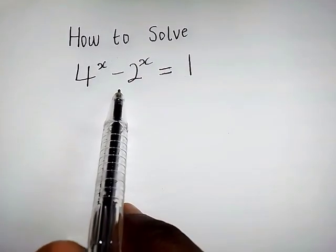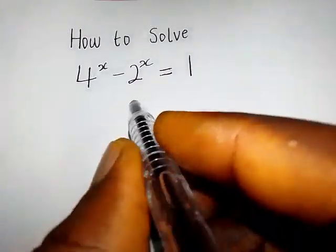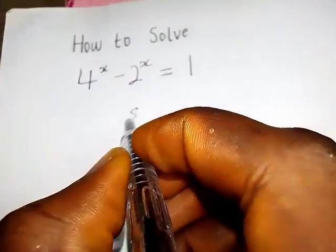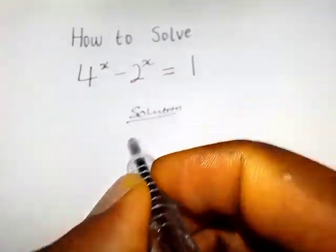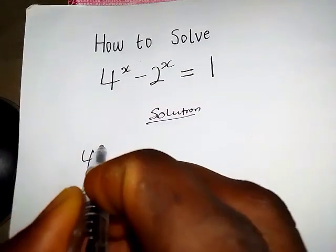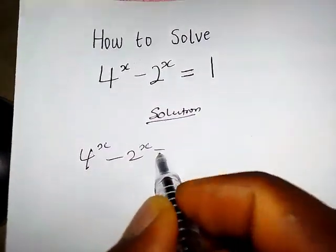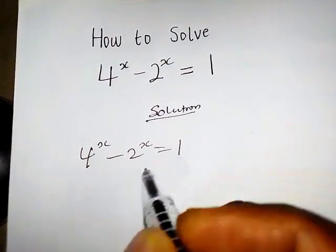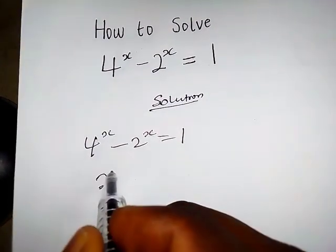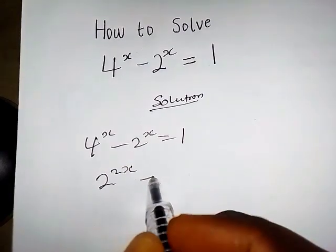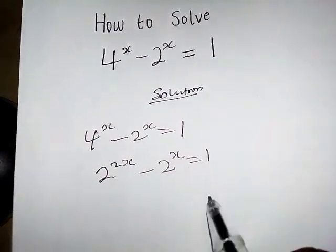How to solve 4 raised to the power of x minus 2 raised to the power of x equals 1. We have 4^x minus 2^x equals 1, which can be written as 2 raised to the power 2x minus 2 raised to the power x equals 1.